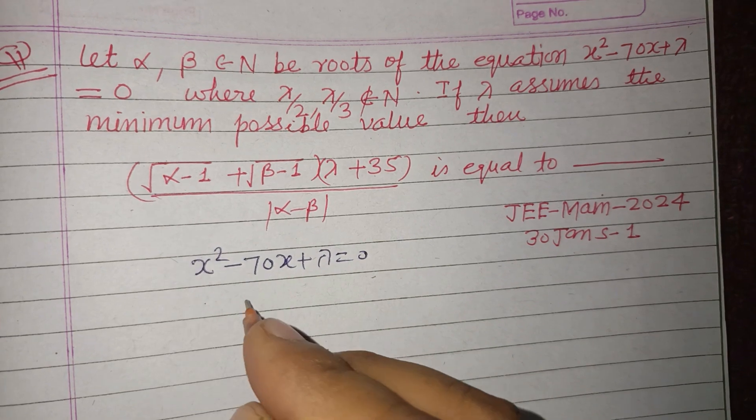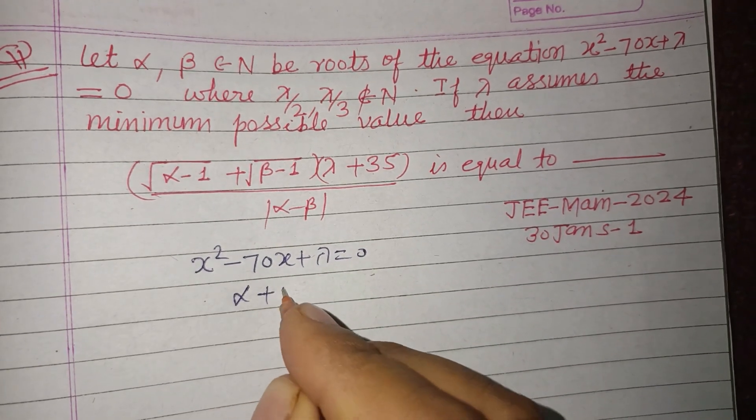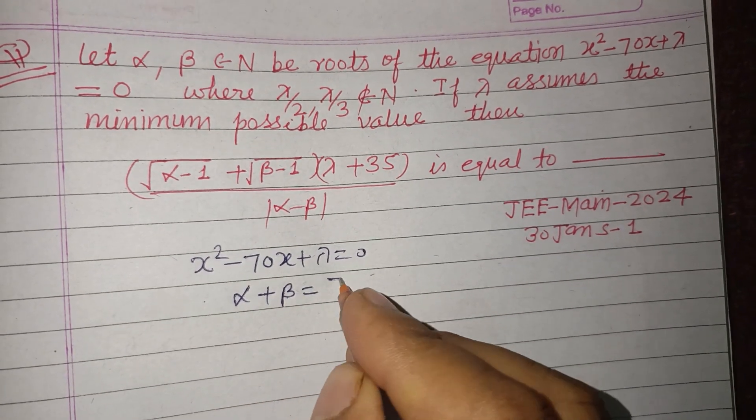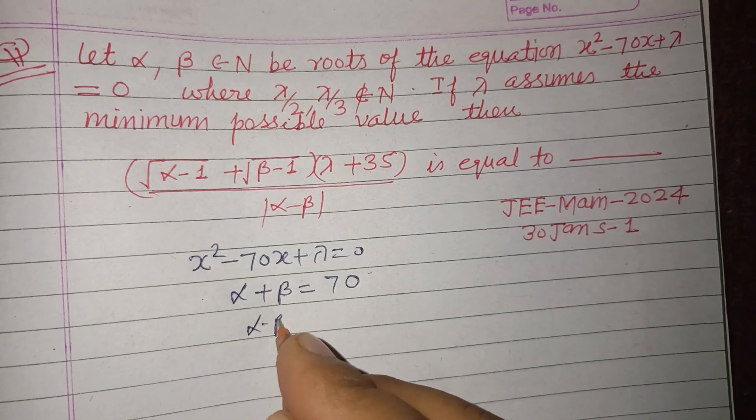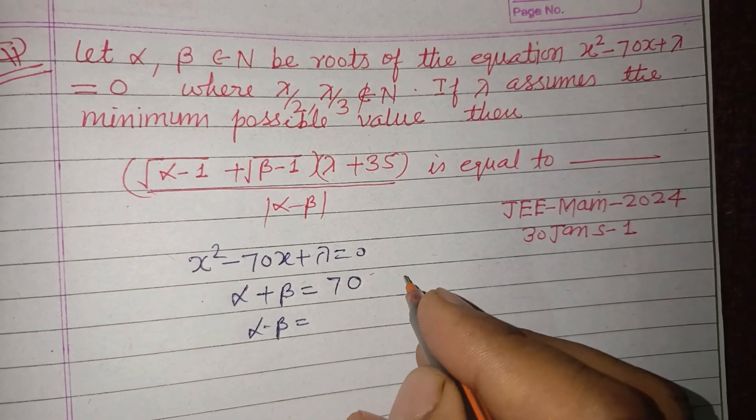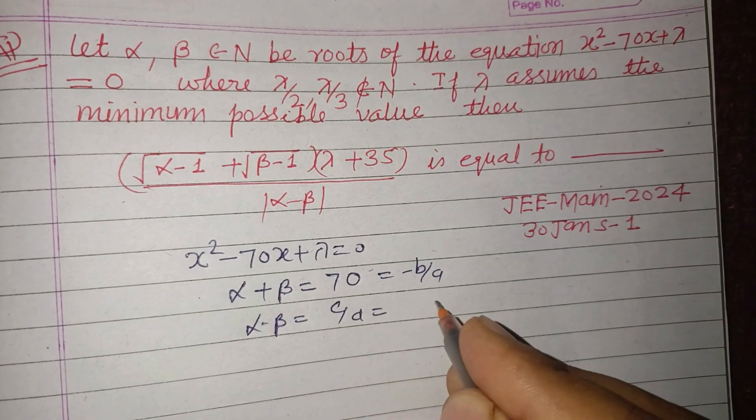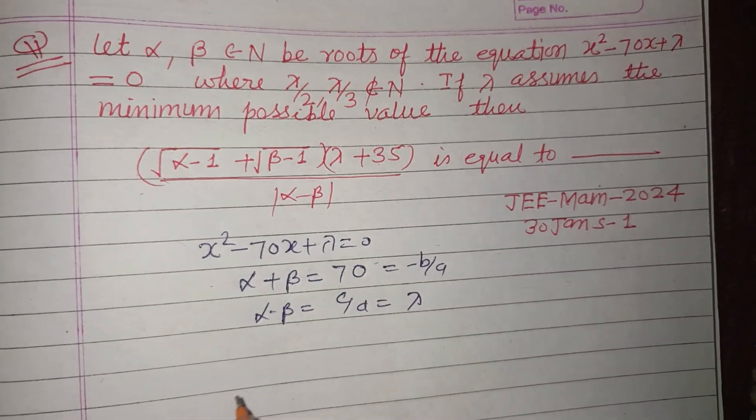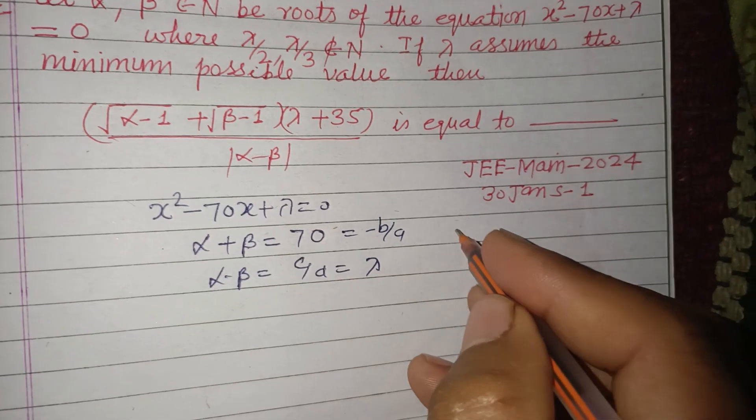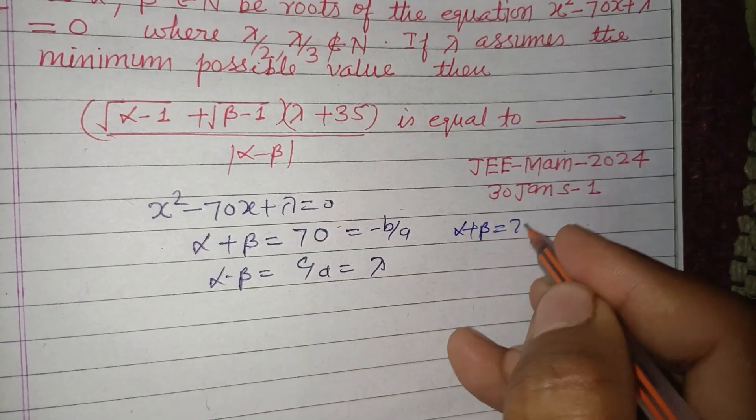So students, for x² - 70x + λ = 0, if alpha and beta are its roots, then alpha plus beta equals -b/a, which is 70. And alpha times beta equals c/a, which is λ. From these two equations, alpha + beta = 70 and alpha·beta = λ.